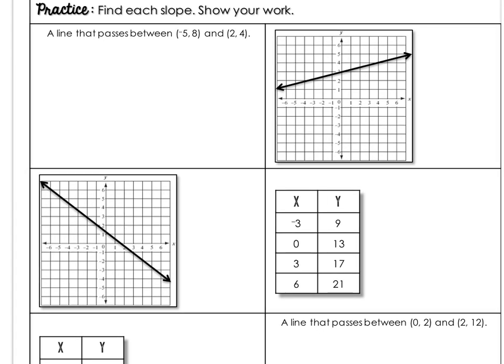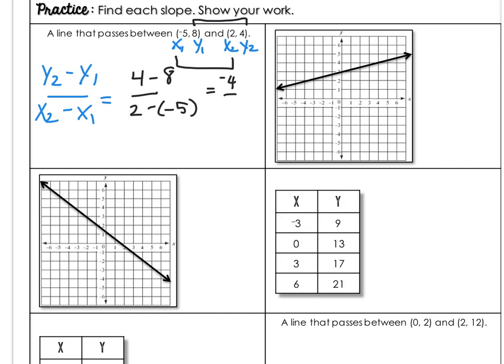In our first problem, we're going to find the slope of a line that passes between negative 5, 8 and 2, 4. So first, I'm going to label x1, y1, and x2, y2. Now we're going to write the formula, y2 minus y1 over x2 minus x1. So I'm going to do y2, which is 4, minus y1, which is 8, 4 minus 8, over x2, which is 2, minus negative 5. So 4 minus 8 is negative 4, and 2 minus negative 5, that's 2 plus 5, is 7. So my slope is negative 4 over 7.